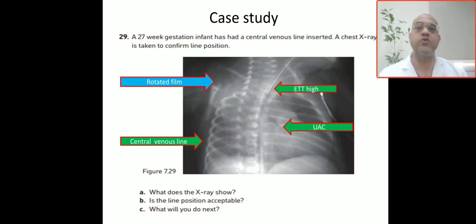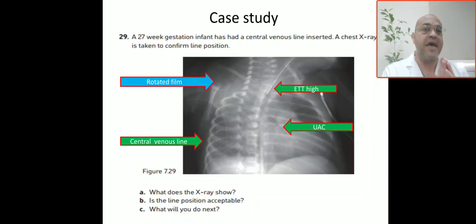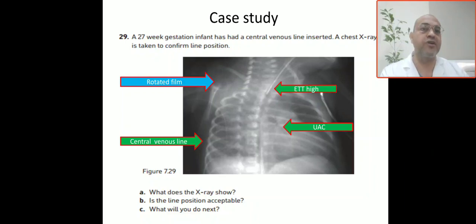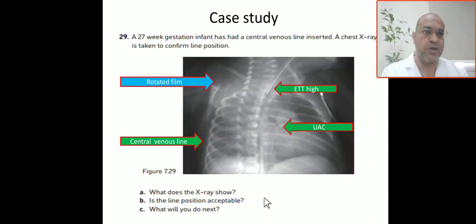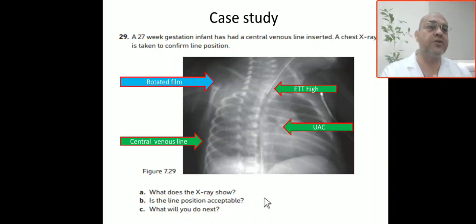Our case today: a 27-week gestation infant who has had a central venous line inserted. An X-ray has been taken to confirm the line position. There are three questions you have to answer: first, what does the X-ray show? Second, is the line position acceptable? Third, what will you do next?